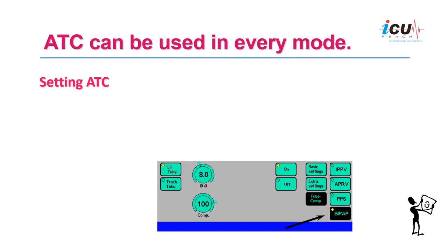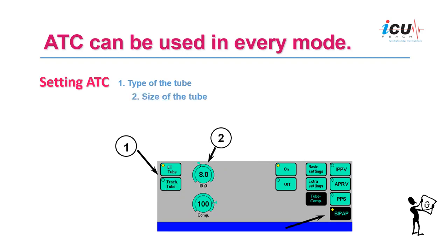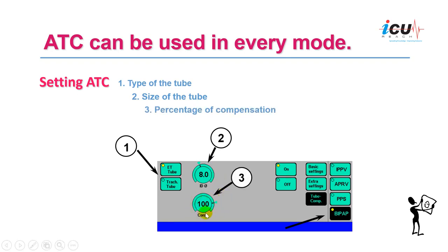To set up ATC, you first need to know the type of tube — whether it is an endotracheal tube or a tracheostomy tube — and then the size of the tube. You enter these on the ventilator and then determine the percentage of compensation, whether you compensate for 80 percent or 100 percent. Once set, you switch it on.